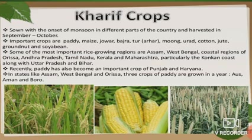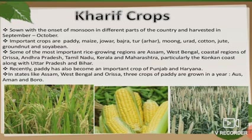India has a very good coastline, so coastal regions are best suited for growing Kharif crops. Recently paddy has also become an important crop of Punjab and Haryana. In states like Assam and West Bengal, three crops of paddy are grown in a year, called Asa, Aman and Boro.